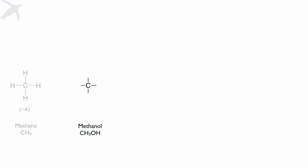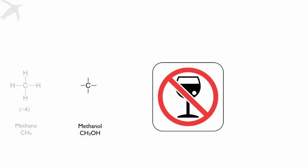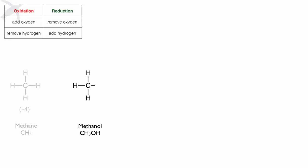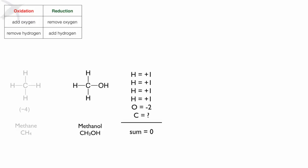Let's look at methanol. Methanol, you may know as wood alcohol, and this is very, very toxic to drink. When you look at the structure of methanol, you'll notice there's an OH group — we've added an oxygen. If you add up all the oxidation states of everybody in the molecule methanol, you can calculate what carbon's oxidation state has to be. Carbon has an oxidation state in methanol of -2.